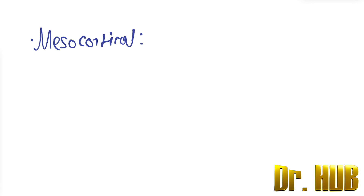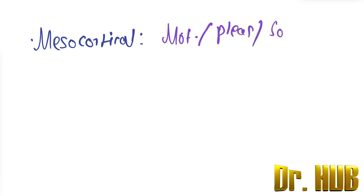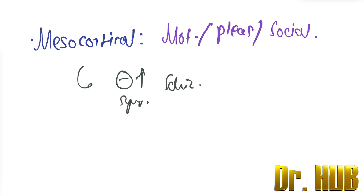Next is the mesocortical pathway, which is associated with motivation, pleasure, and socialization. The action of the drug blocking the D2 receptors here may increase the negative symptoms of schizophrenia. So in mesolimbic it was the reduction of positive symptoms, whereas in mesocortical it is the increase in negative symptoms of schizophrenia.